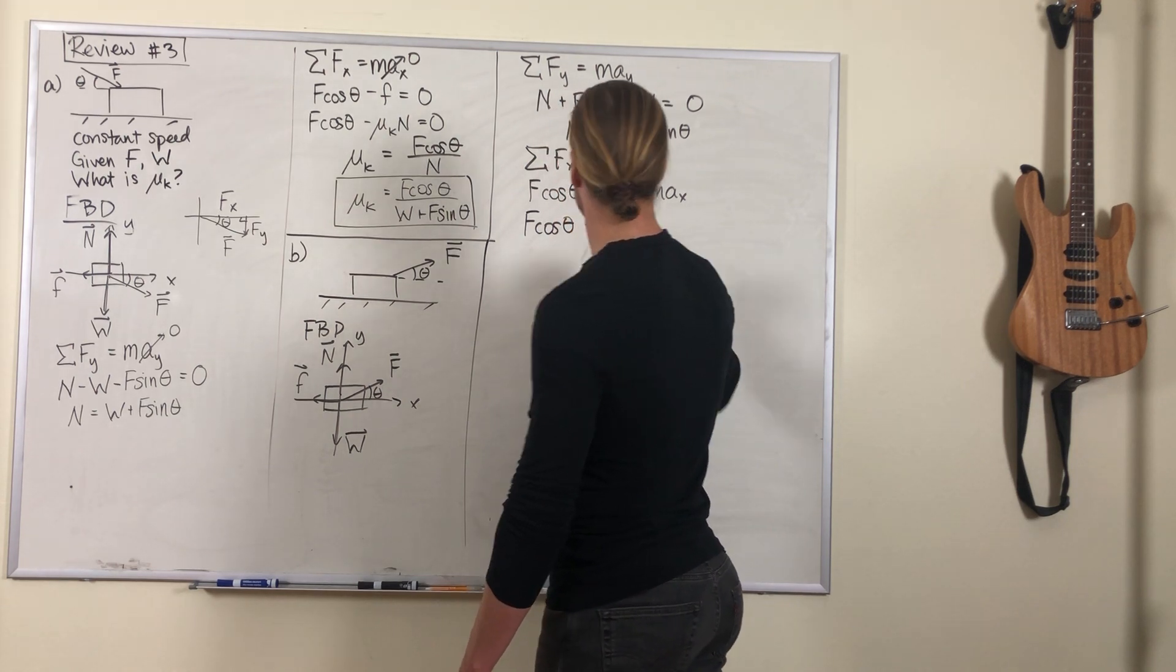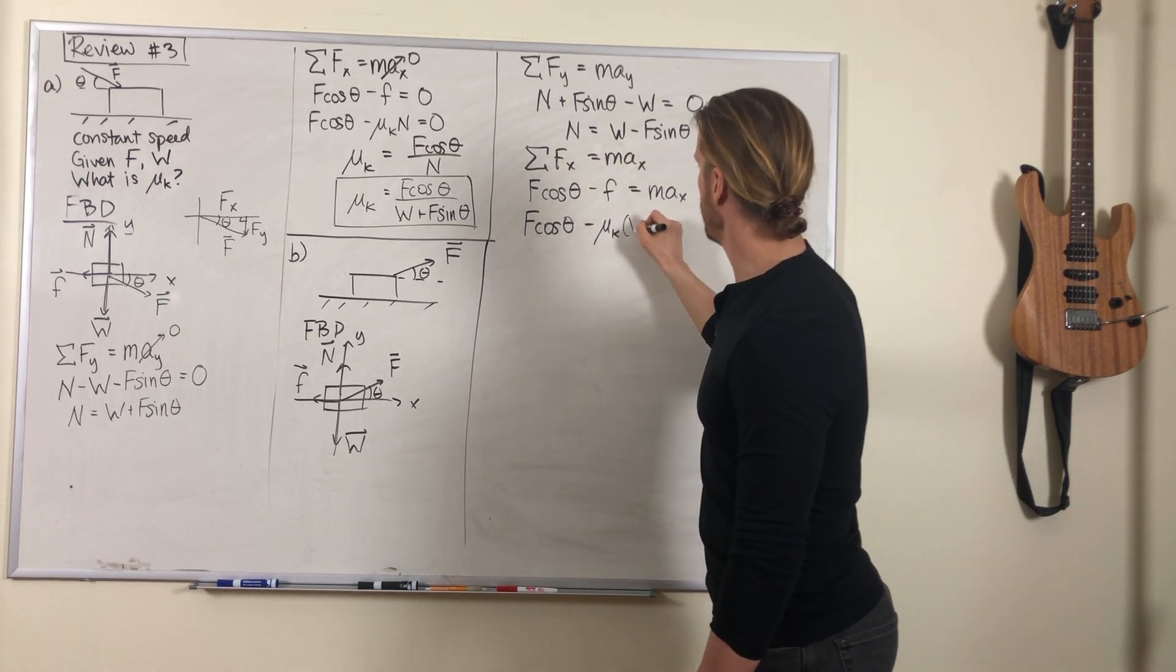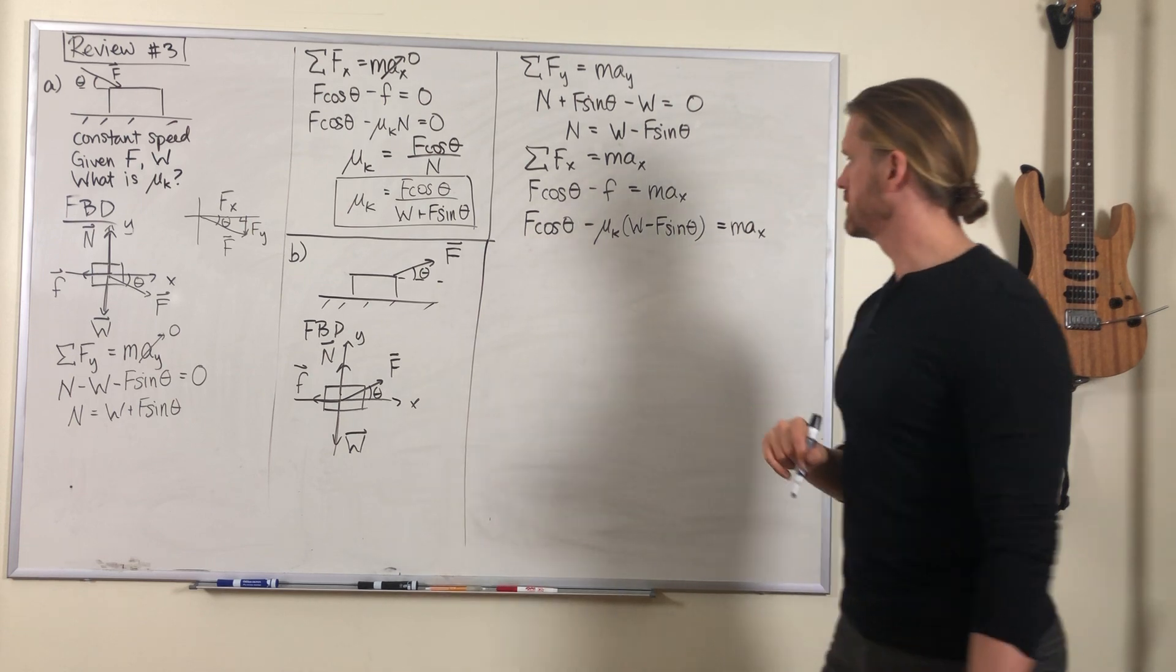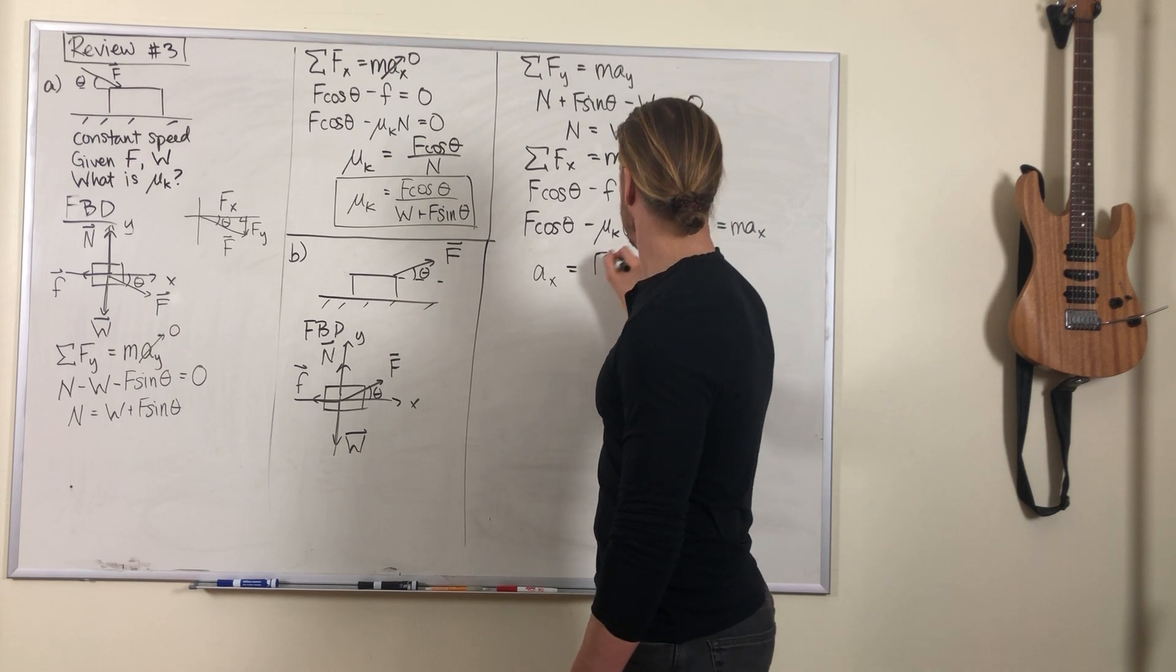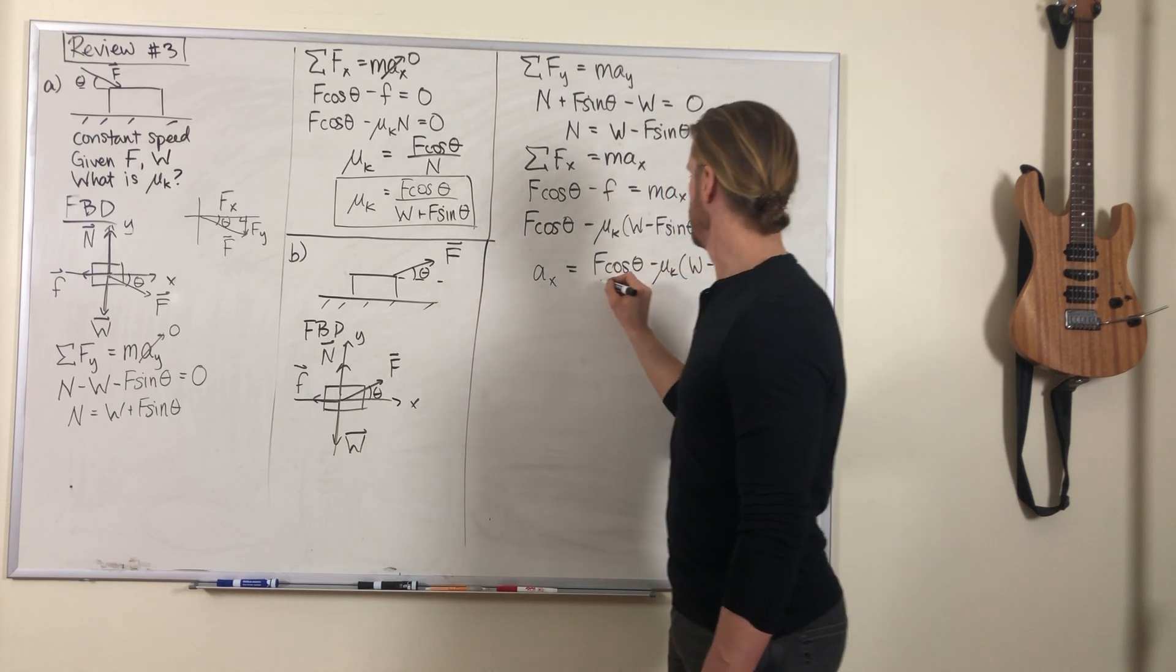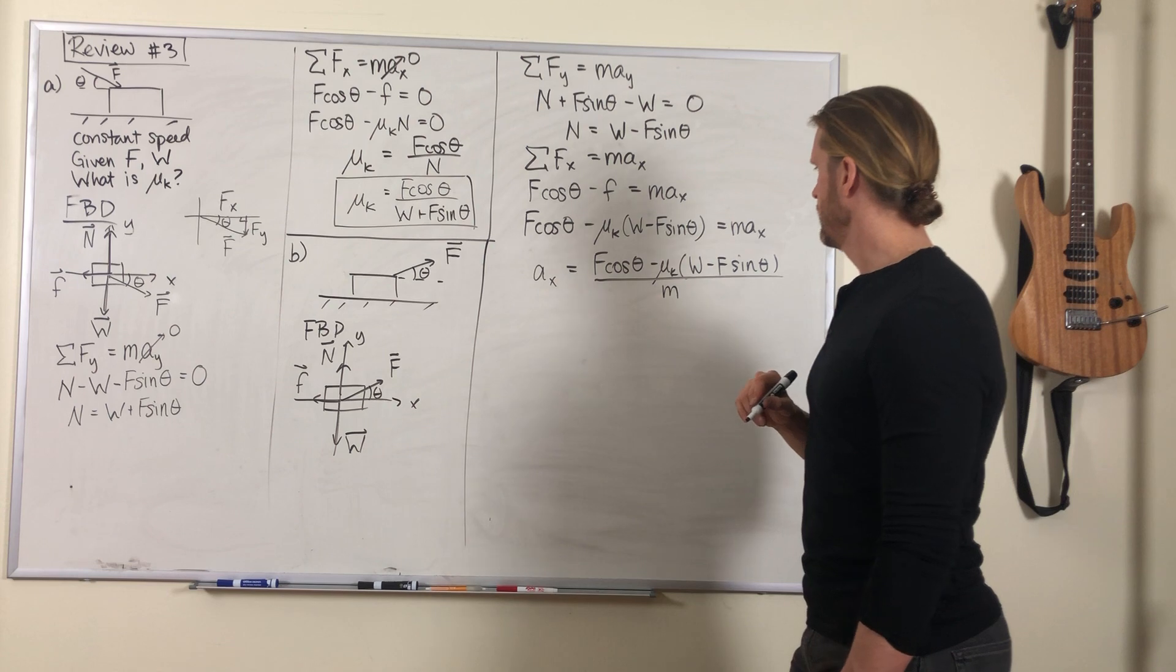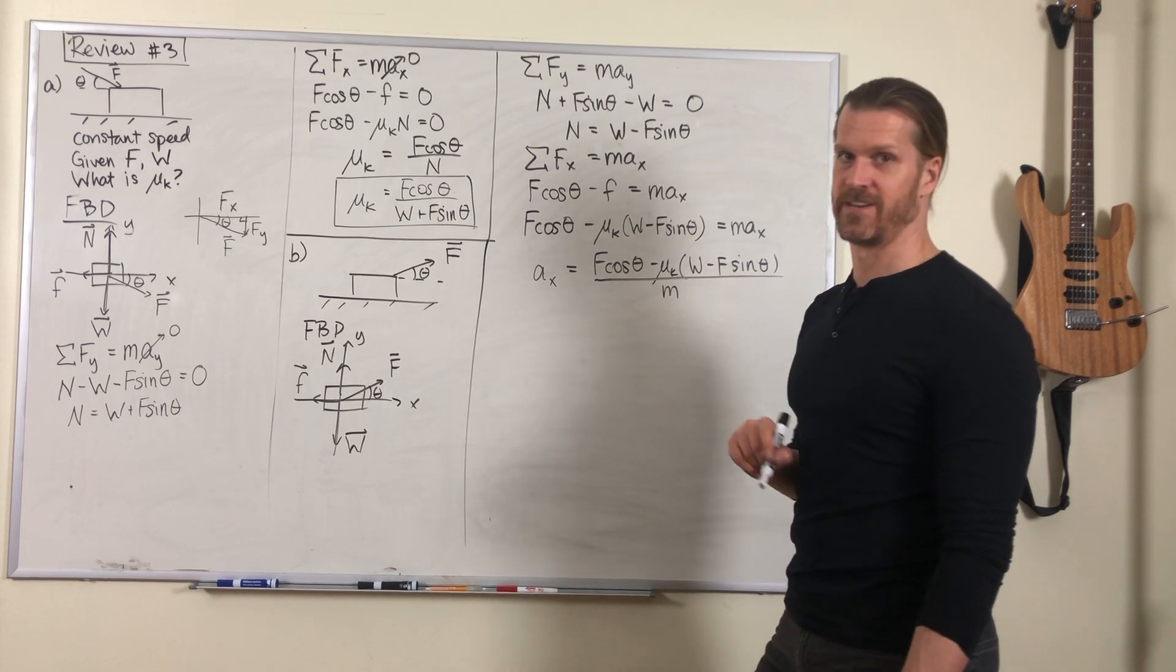We'll substitute for the friction force. The friction force is mu times N, where N is the expression we just found. So the acceleration equals F cosine theta minus mu times W minus F sine theta, over m.